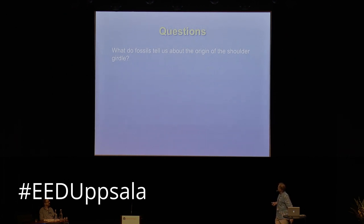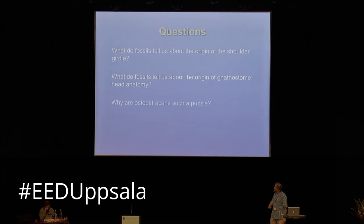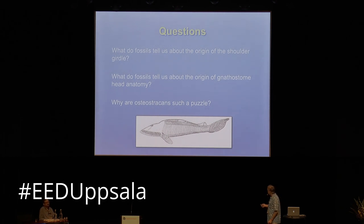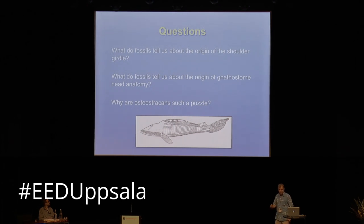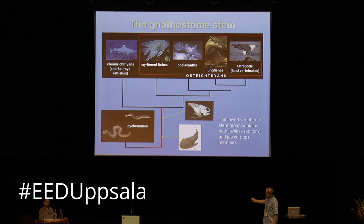Some questions we can look at tonight: first, what do fossils tell us about the origin of the shoulder girdle? Second, what do fossils tell us about the origin of jawed vertebrate head anatomy? And finally — you'll understand why I highlight this later — why are osteostracans such a puzzle? This is an osteostracan; it looks like a harmless fish but it's not. These things are nothing but trouble, and it's taken me a great deal of effort and time to understand how they fit into the story.